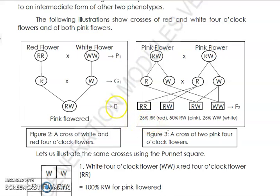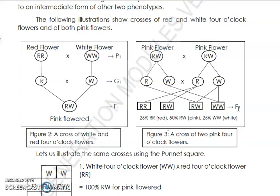Why is it the second filial generation? Because the F1 is the first offspring — RW — and we then combine all the pink F1 offspring to get F2. The F2 results are: red, pink, and white. In other words, the original parents produced pink offspring (F1), and those pink offspring combined to give red, pink, and white in the F2 generation.